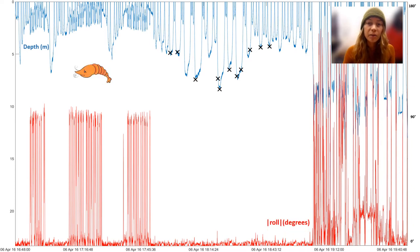As you can see here, feeding behavior is indicated by periods of stereotypical rolling, and was visually confirmed via tag cameras for our analyses.